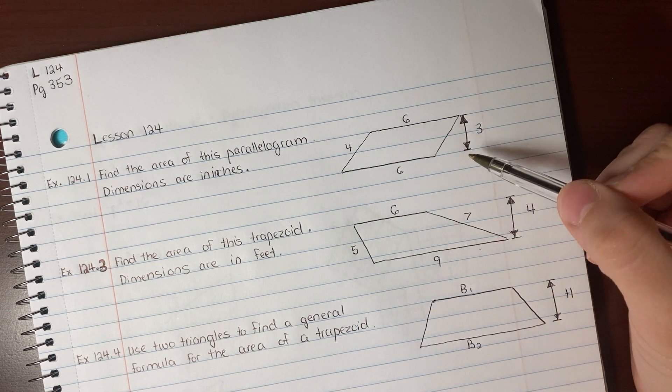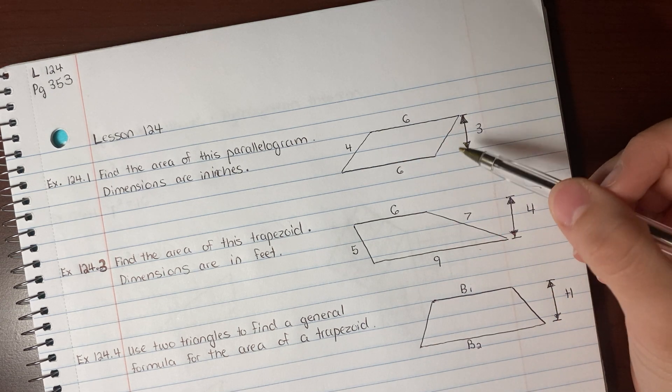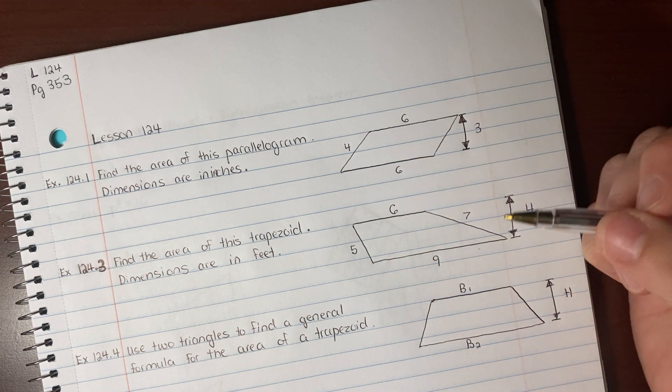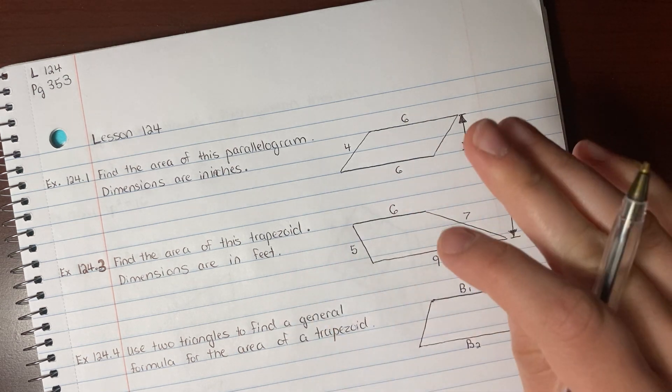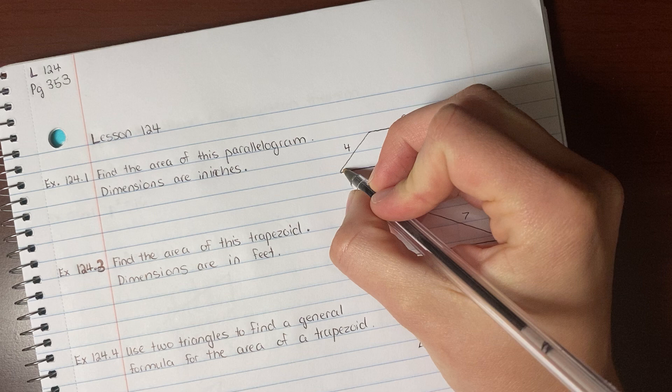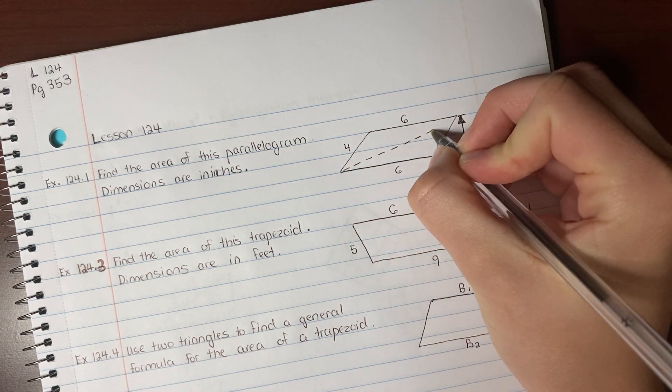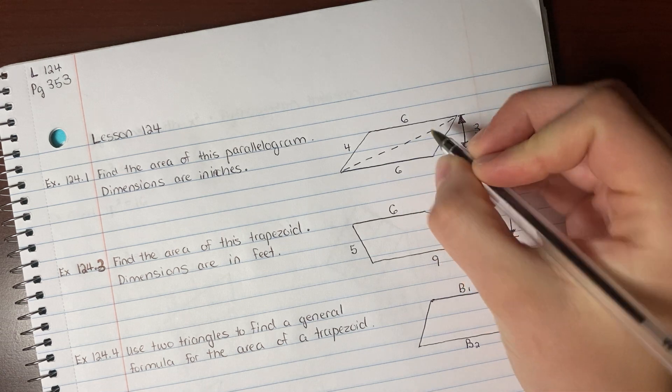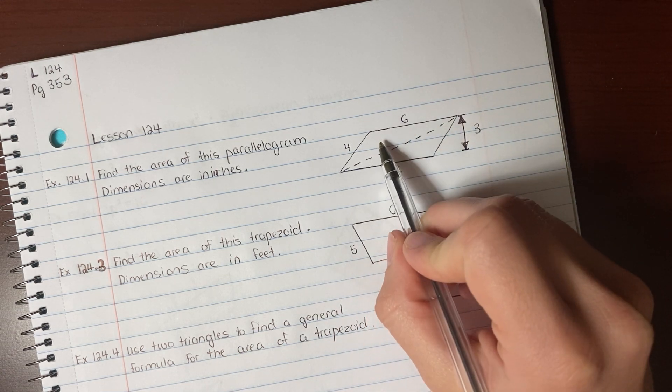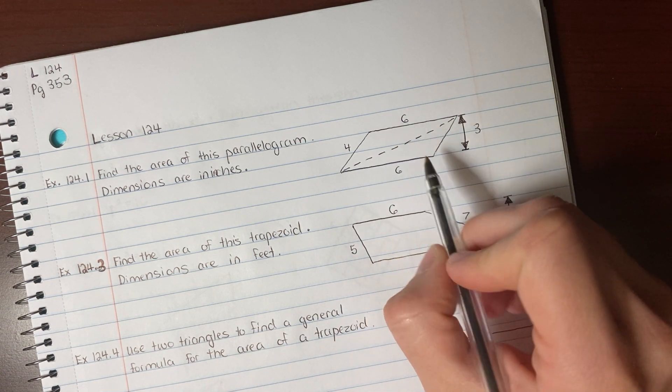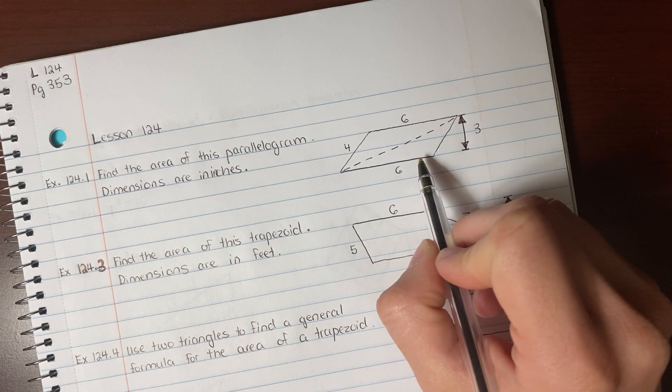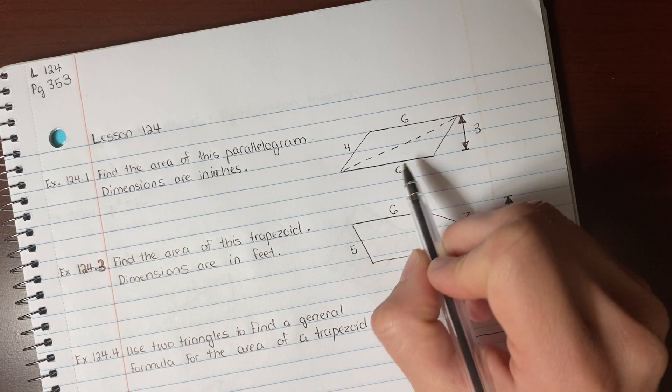If you see a parallelogram like this, a lot of times people just want to go 6 times 4, the area is 24. That's incorrect. What you're going to do is divide this into two triangles. Then you're going to do base times height for this triangle divided by 2, base times height for this triangle divided by 2.